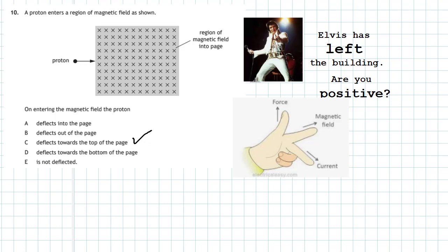That's quite hard to explain in one dimension, so I'm going to include a little movie to show you where we use our hand. Watch the quick movie and you'll get the reason why. Remember: 'Elvis has left the building — are you positive?' If it's a positive charge, we use our left hand. The thumb is the force, the first finger is the magnetic field, and the second finger is the current. Arranging that into the diagram, the force is acting upwards, so the proton is deflected to the top of the page.